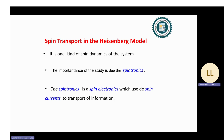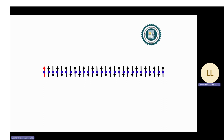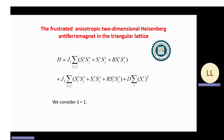Spin transport in the Heisenberg model is one kind of spin dynamics of the system. The importance of this study lies in the spintronics field. Spintronics, or spin electronics, uses spin current to transport information. A representation of the spin current is given by an animation, where we see the spin flip transport in one dimension.